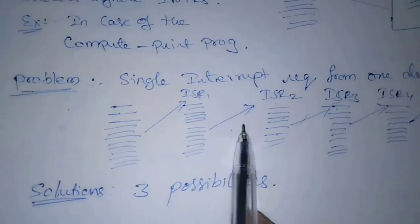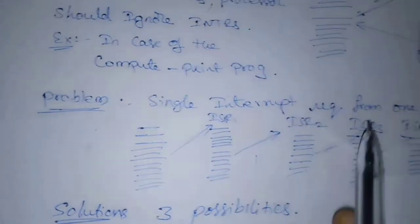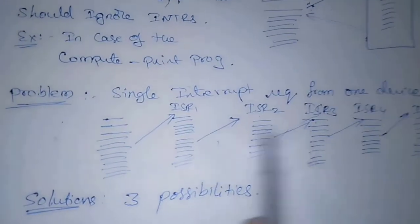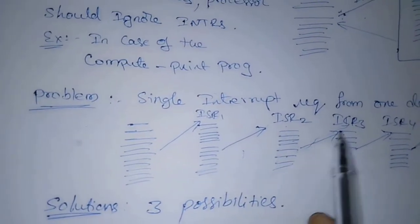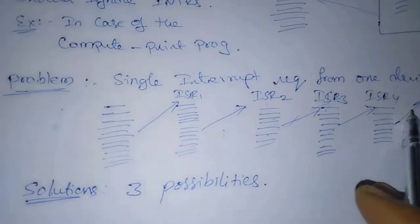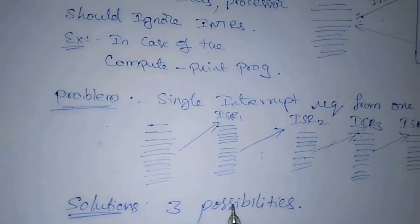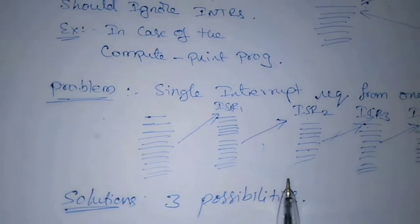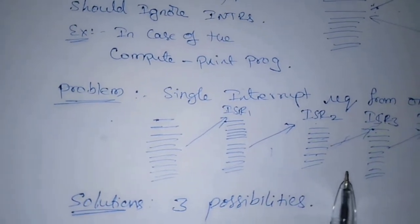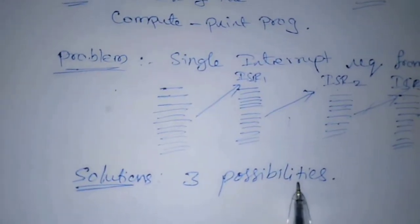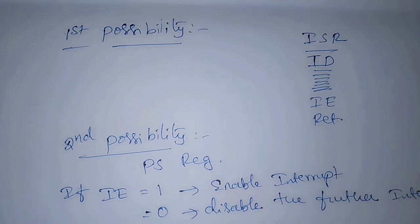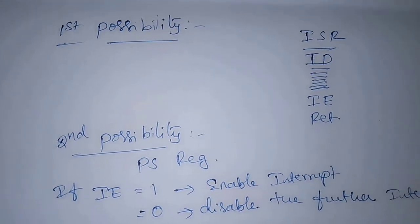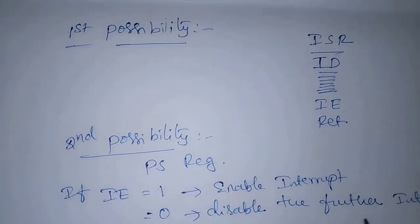Likewise, processor enters into infinite loop if INTR is HAC2. Now ISR execution will be completed here. Here, processor keeps on jumping into ISR routines. So, several mechanisms are available to solve this problem. There are three possibilities to solve this problem. While executing one ISR, interrupt request should be disabled. Let us see how the interrupt request will be disabled.